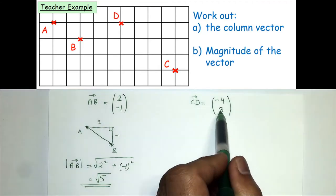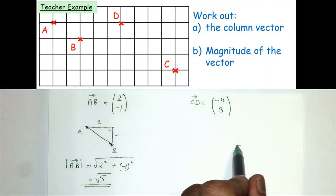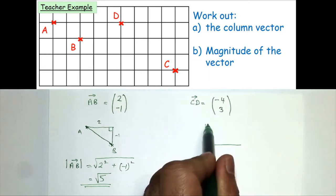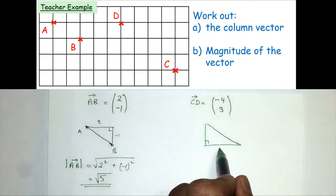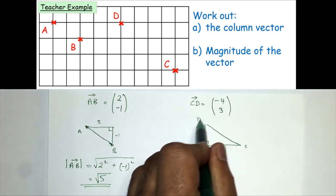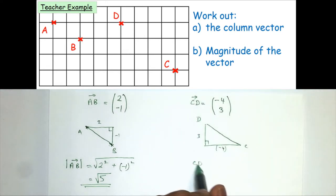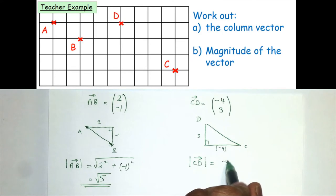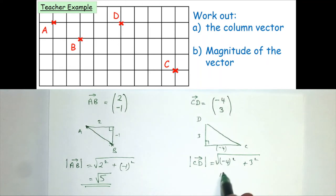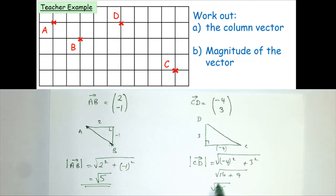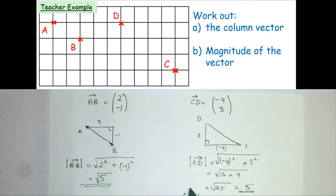For the second question, from C to D it goes four squares to the left and three squares up, again forming a right-angle triangle. The magnitude of CD equals the square root of (-4) squared plus 3 squared, which is the square root of 16 plus 9, equal to the square root of 25, so the magnitude of CD is equal to 5.